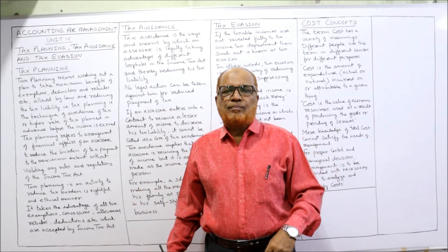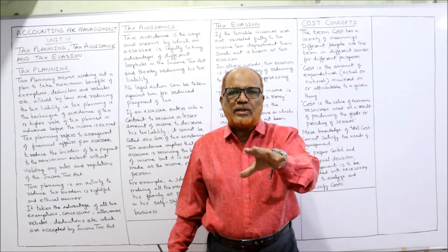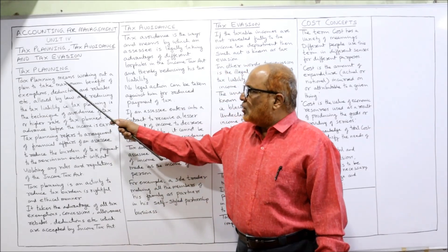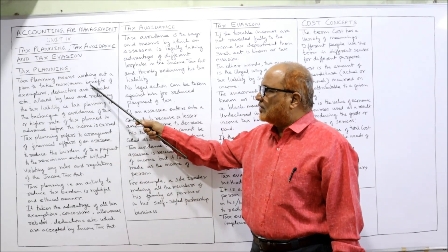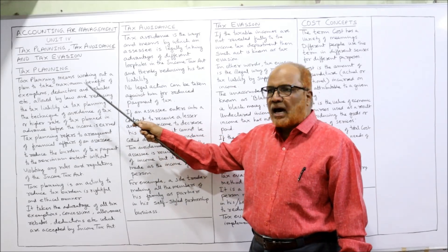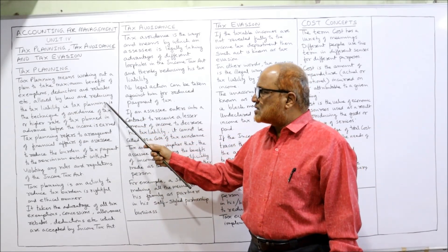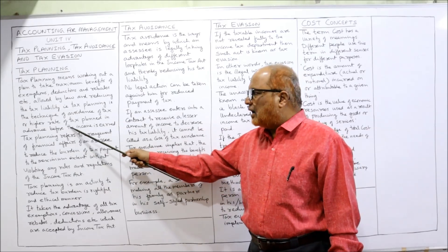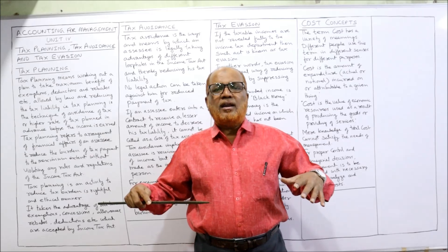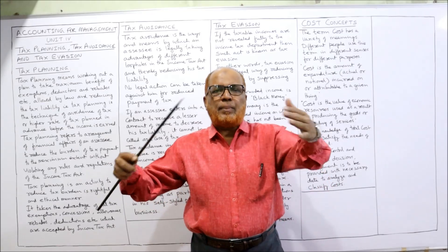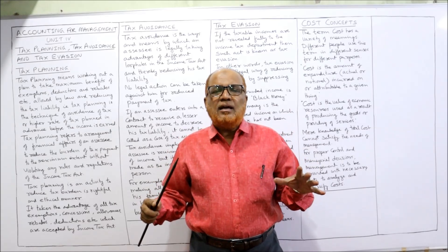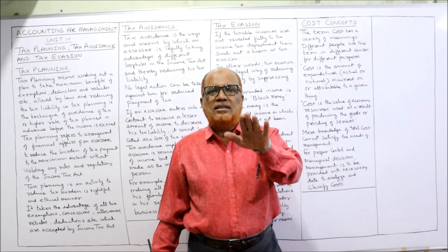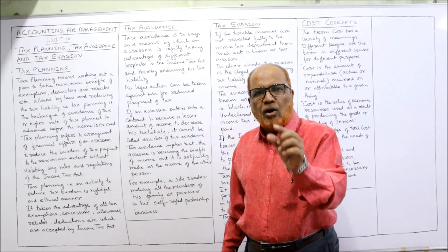When I make tax planning, I am taking the advantage of what the act has given — so many benefits through which I can reduce my tax liability in the form of allowances, exemptions, deductions, etc. Tax planning means making maximum benefits of exemptions, deductions, and rebates allowed by law and thereby reducing the tax liability. It is the technique of avoidance of tax or a higher rate of tax, planned in advance before the income is earned.